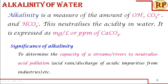The significance of this experiment is mainly to determine the capacity of a stream or a river to neutralize acid pollution — that is, acidity present in the water due to acid drain or discharge of acidic impurities from industries. This is the major significance.